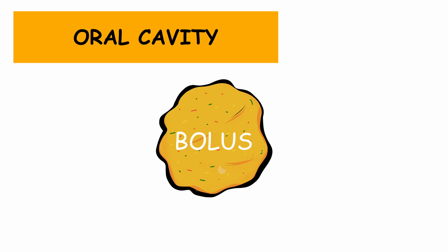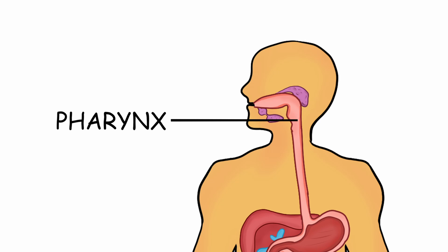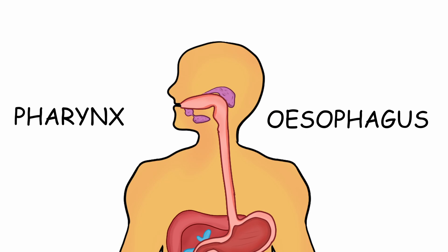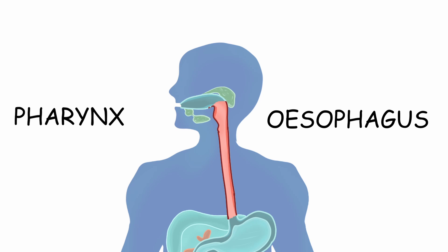The bolus, when swallowed, moves into the pharynx, a hollow tube that starts behind the nose and ends at the top of the trachea and esophagus. The bolus travels down the pharynx to enter the esophagus, a small muscular tube that connects the pharynx to the stomach.